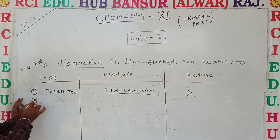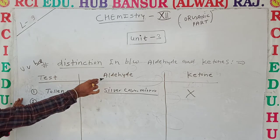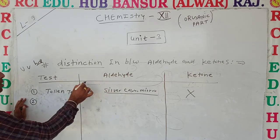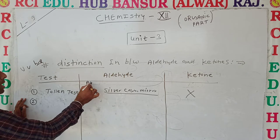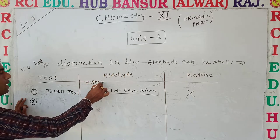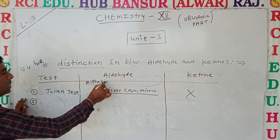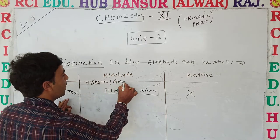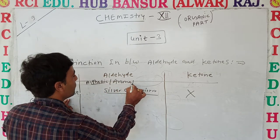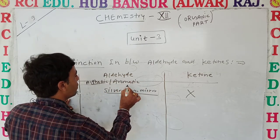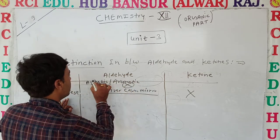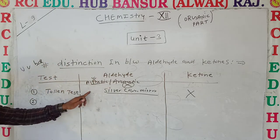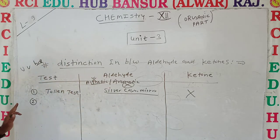Tollens reagent is used to differentiate aldehydes and ketones. Aldehydes are mostly aliphatic. If you differentiate aldehydes into aliphatic and aromatic, only aliphatic aldehydes give the Tollens test reaction. Ketones do not give this reaction.